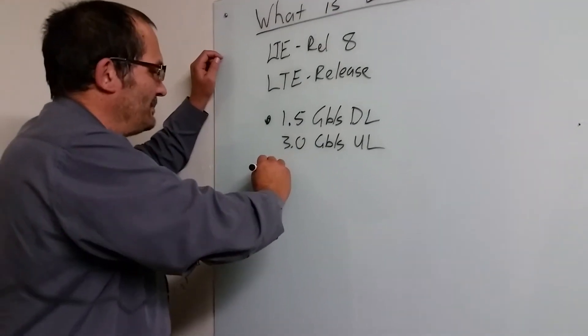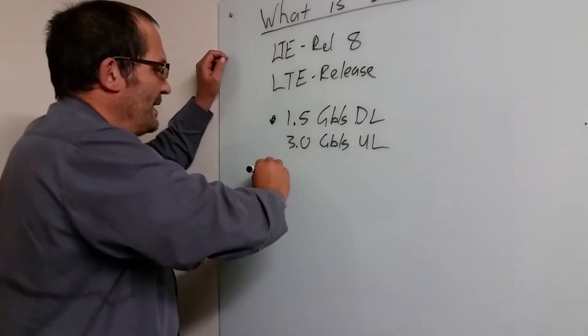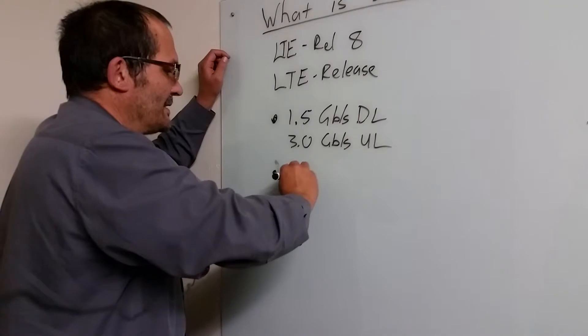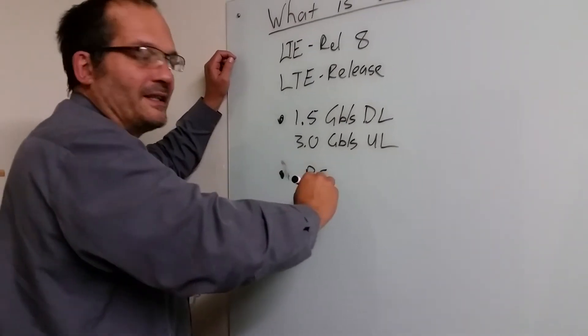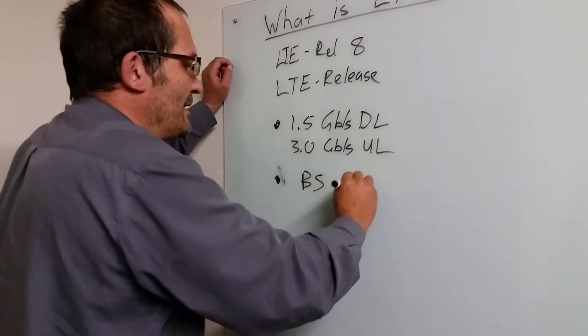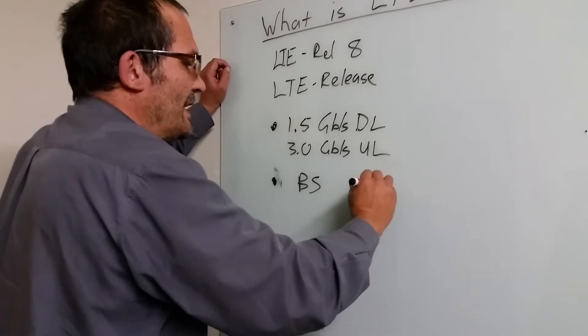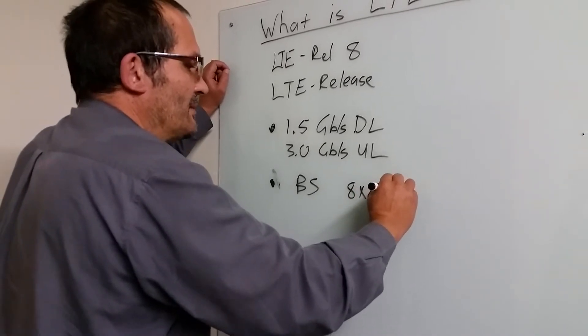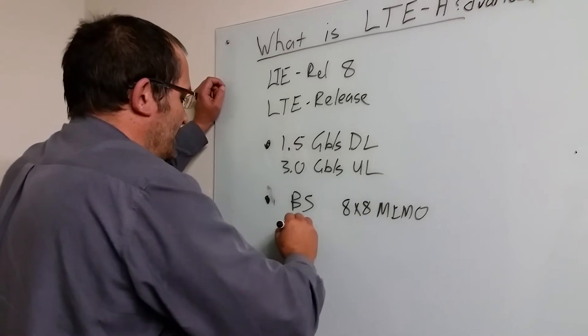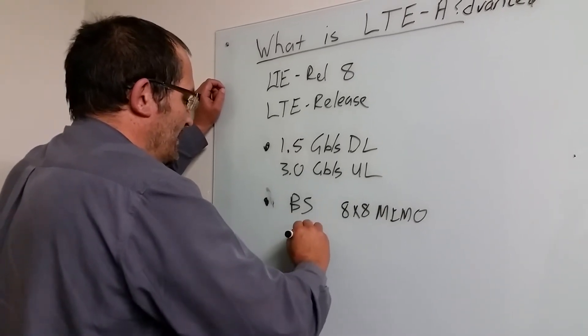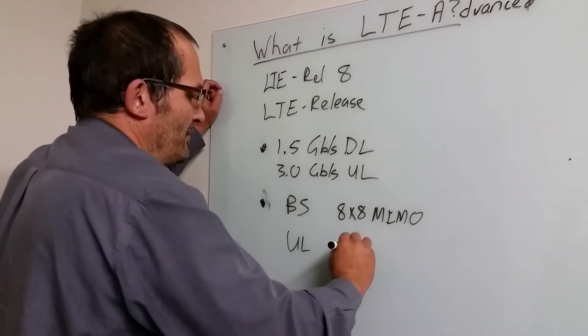The part that's interesting to us doing antennas is that they also claim that the base stations, which got another designation in LTE, will use 8x8 MIMO. So 8 antennas will transmit and receive, and the user terminals will use 4x4.